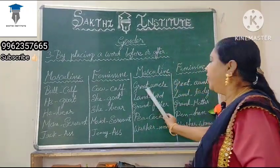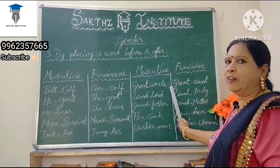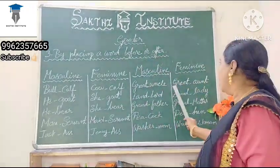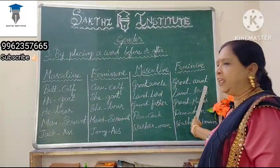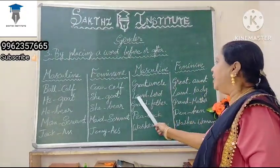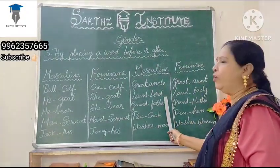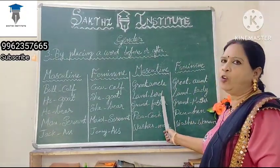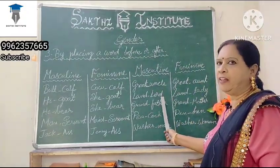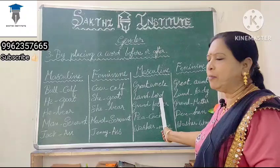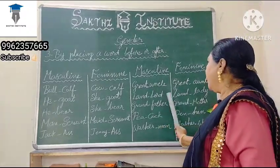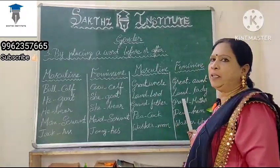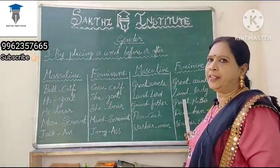Great uncle is periyapa. Great auntie is periyamma. Landlord — one who is having more land — landlord becomes landlady in the feminine gender.